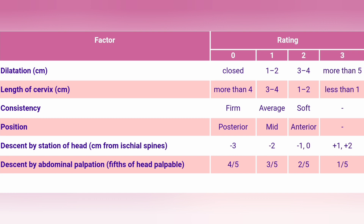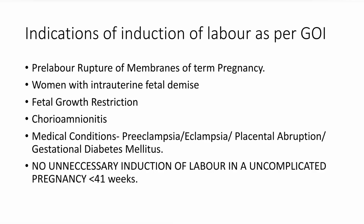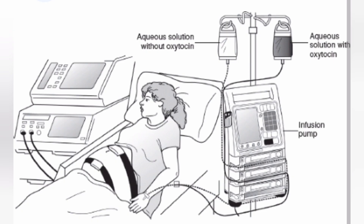If the Bishop score is less than 5, you go for cervical priming either with dinoprostone or misoprostol. If the Bishop score is more than 5, you proceed directly with oxytocin augmentation. As per guidelines, there are maternal and fetal indications for induction of labor, but there should be no unnecessary induction of labor in an uncomplicated pregnancy of less than 41 weeks.